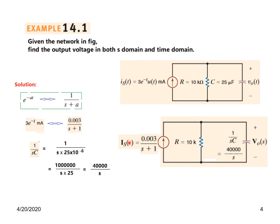So this is the circuit now in S domain. We have changed the current source, changed the capacitor value, and changed the output from V0 to V0(S). We can find the output using KCL, but the approach followed by the book — which we will follow — is that since these elements are in parallel, the voltage across both will be the same.